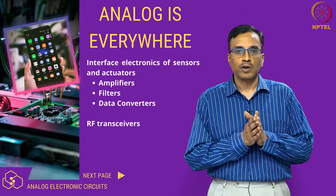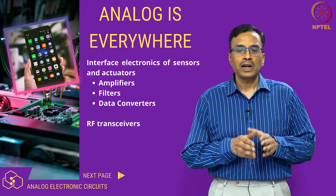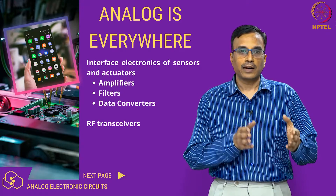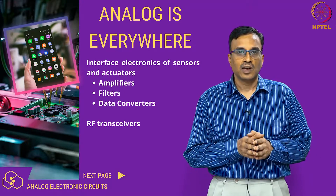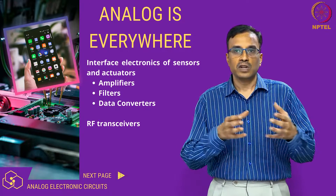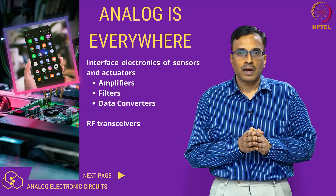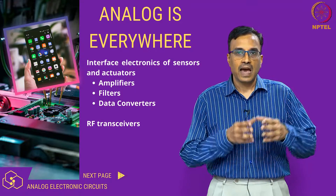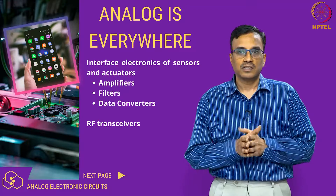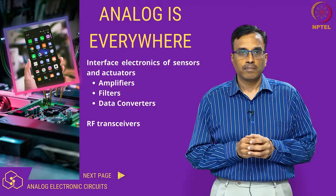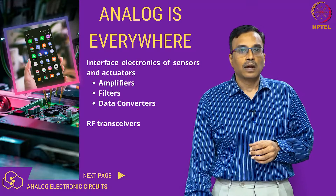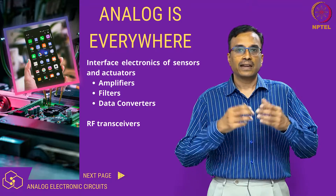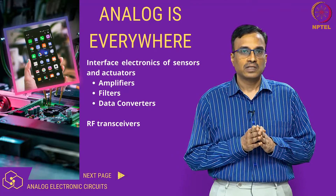A modern cellular phone has multiple sensors which need interface electronics to convert signals from analog to digital, and such interface electronic circuits need amplifiers, filters, and data converters. An RF transceiver is also an integral part of such a system.